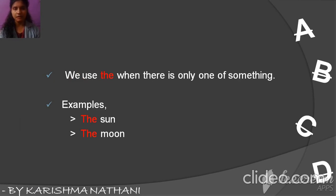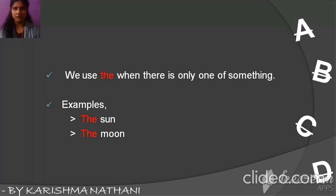For example, the sun — as we know, the sun is only one. The moon — the moon is also only one. So we say: the sun, the moon, the earth, etc.